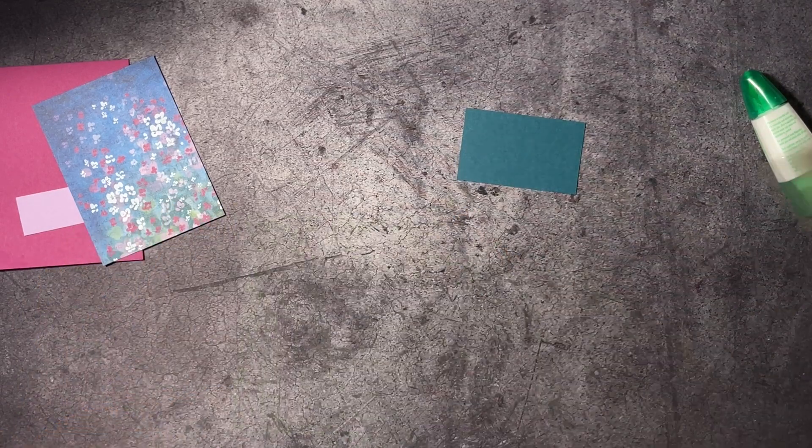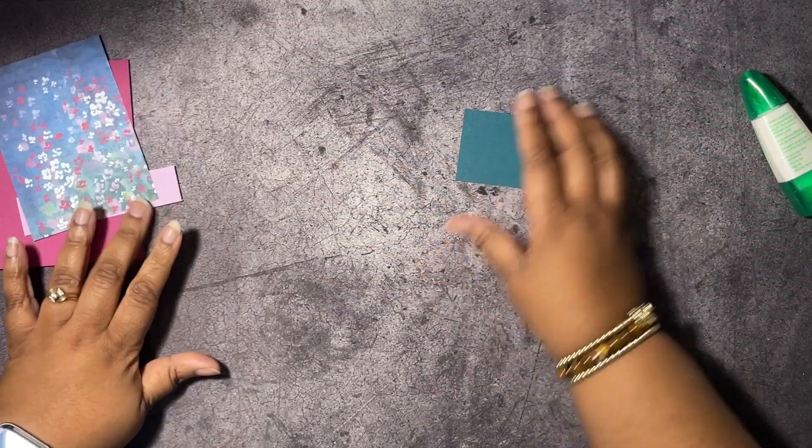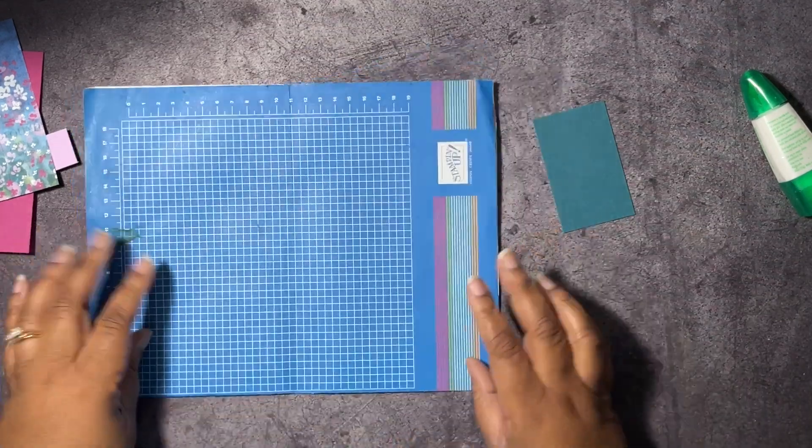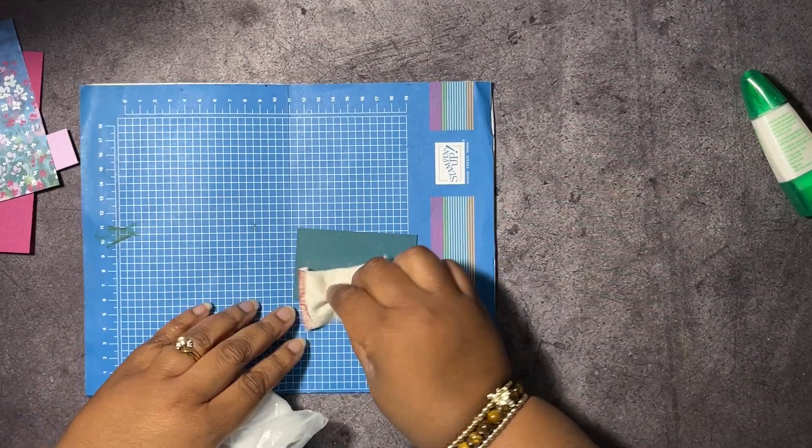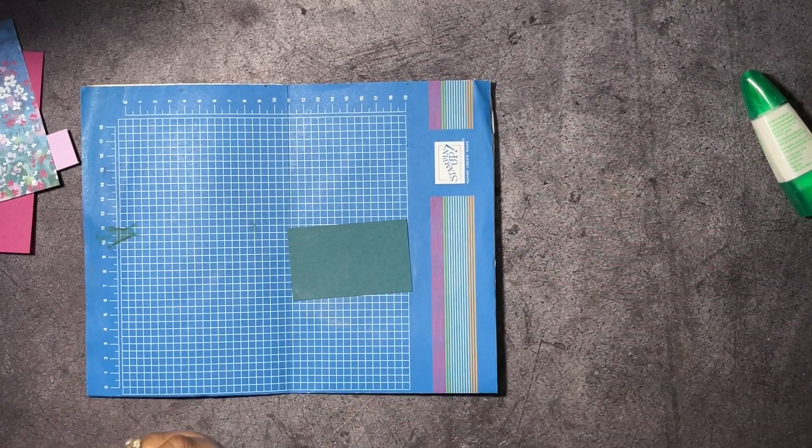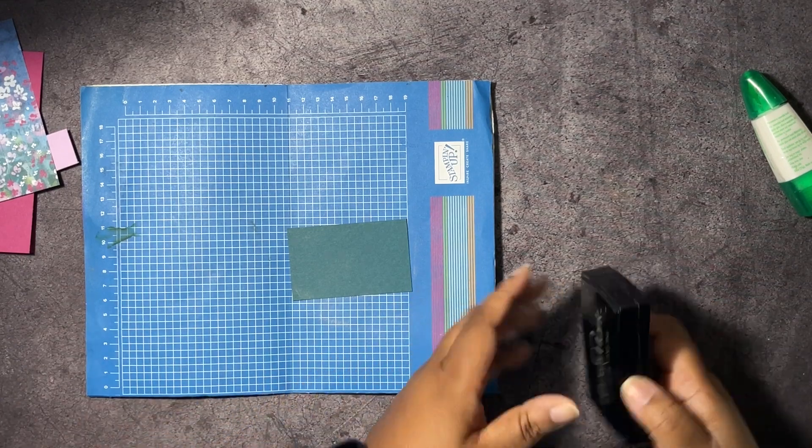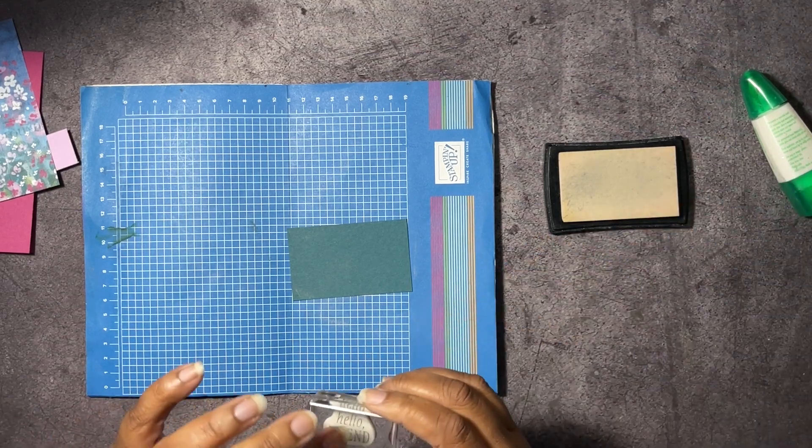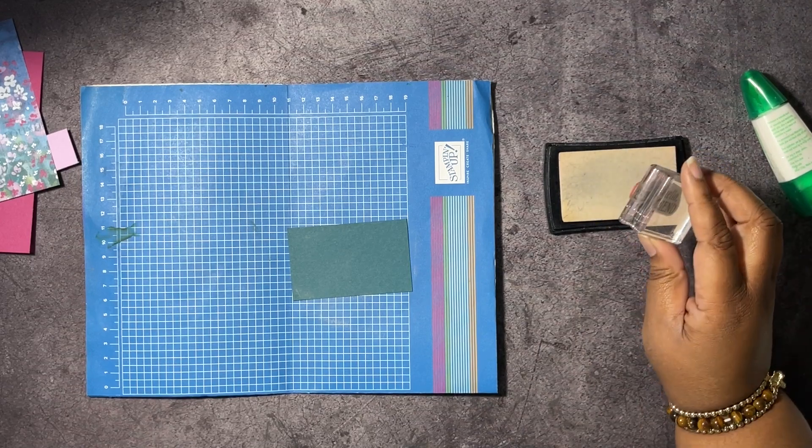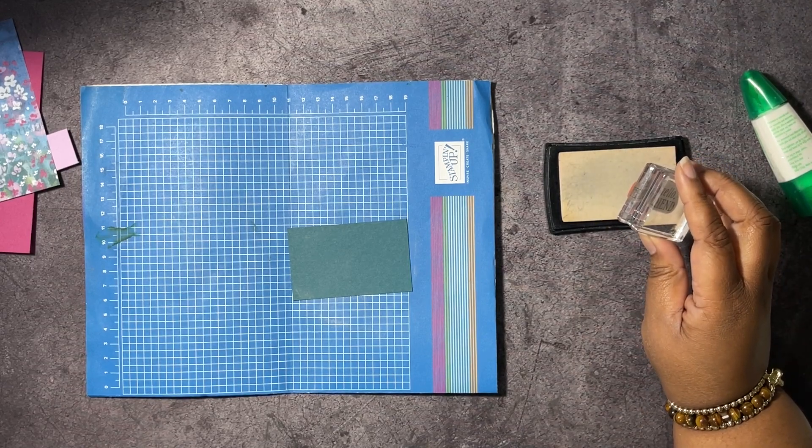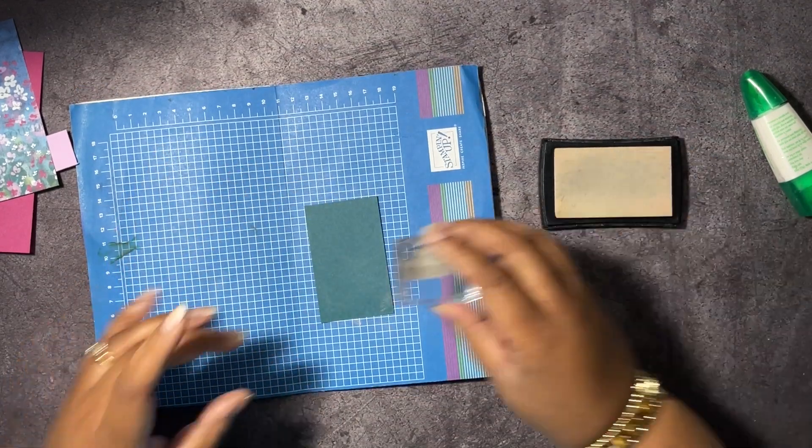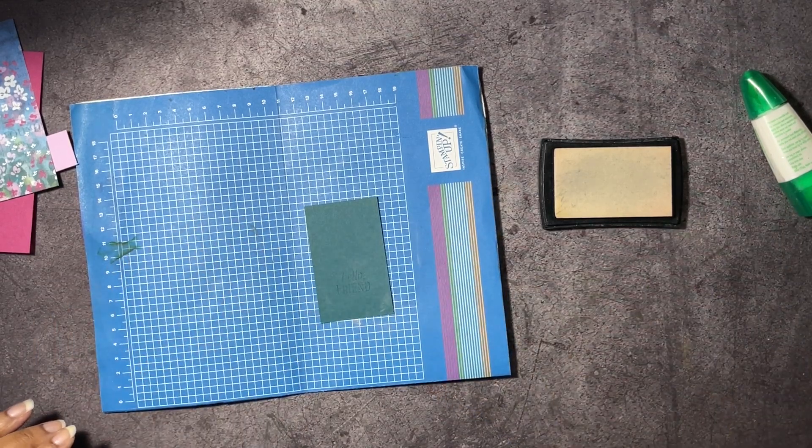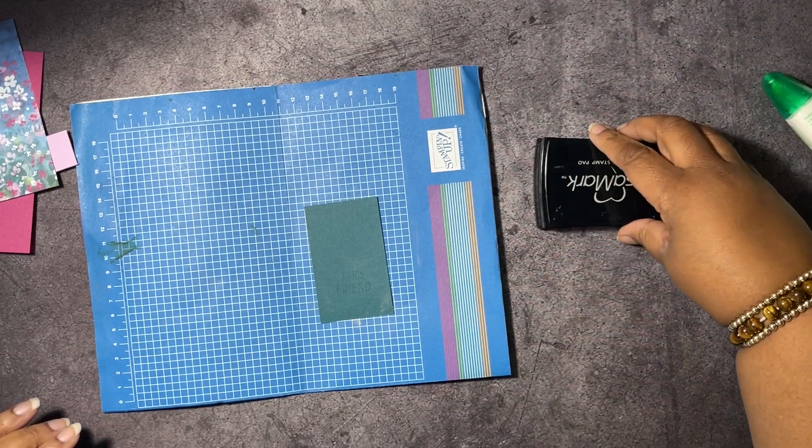While we're waiting on that, we're going to go ahead and do our stamping for our sentiment. This is the only stamp that we're going to do. This is a quick and simple card and we're going to do some heat embossing. Let's get all of our stuff together. Here's my little embossing buddy. If you hear that noise, it's raining. It's about to storm. It's lightning and everything. Let's stamp Hello Friend. Let's see how are we cutting this out. I'll stamp it this way, so let's do Hello Friend right here.